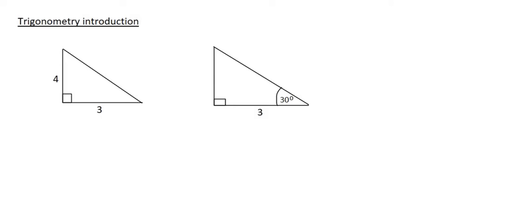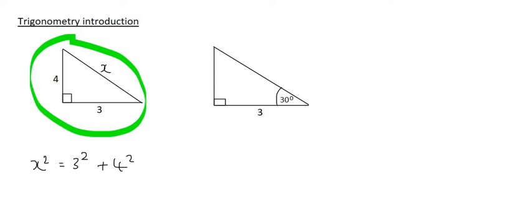For the first triangle that we have here on the left, if I asked you to find this length over here, how would you do that? Well, well done if you remembered Pythagoras. So you would say that x squared is equal to 3 squared plus 4 squared, and that would give you 25 on the right-hand side. And then you would get x by itself by taking the square root, and you would end up with 5.